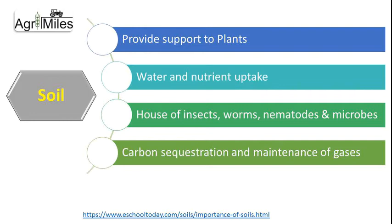The next agricultural input is soil. Soil is important because it provides support to plants, and it is also a source of water and nutrients, as plants uptake water and nutrients from the soil. Soil is also the home of insects, worms, nematodes, and other microbes, which interact with plants in different ways. Soil is also important for carbon sequestration and maintenance of gases.